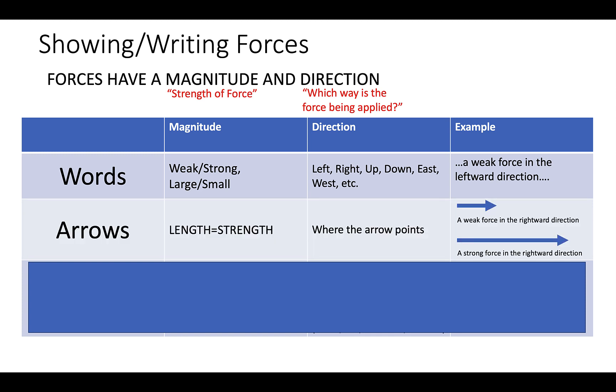I can also use arrows, and this is very common. We will get into diagramming these later. When you use arrows, the length of the arrow indicates the magnitude of the force. A shorter arrow means a weaker force, and a longer arrow means a stronger force. The direction is indicated based on where the arrow is pointing.